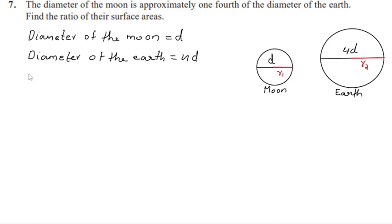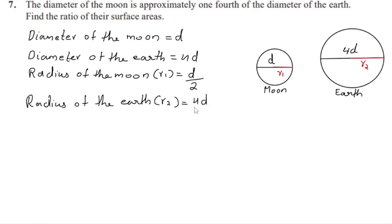Radius of the moon, r1, is d by 2. Radius of the earth, r2, is 4d by 2, which is equal to 2d.